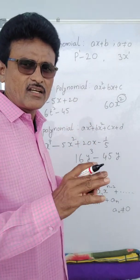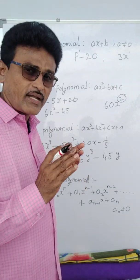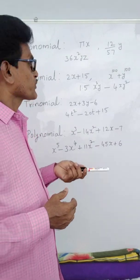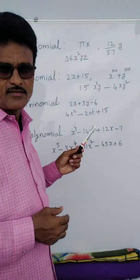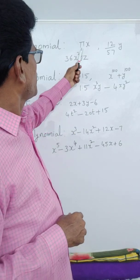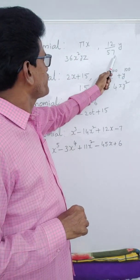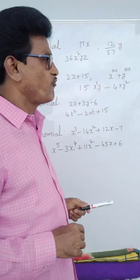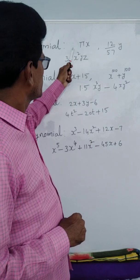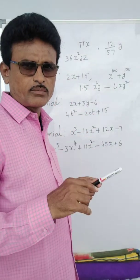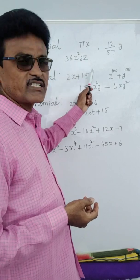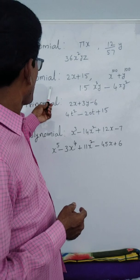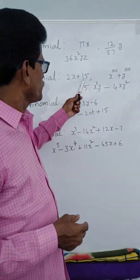Now depending upon the number of terms, we can also classify the polynomials. Monomial means single term. Examples: πx — only one term; 12/57 y — here a rational number constant and y is the variable; 36x²yz — this is also a monomial because it is a single term, but here x, y, z are variables. With three variables also we can write a polynomial.